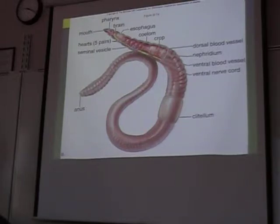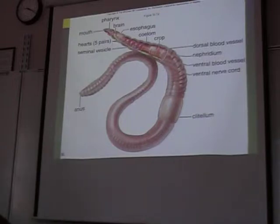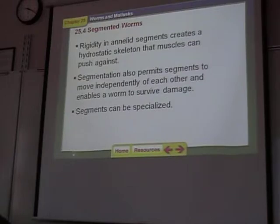It's got a gizzard. A gizzard has little stones in it and grinds up the dirt — it's almost like teeth. In a chicken, when you're eating a chicken gizzard, it's similar — or turkey gizzards. When you have a pet parrot, you have to feed them little grits — little rocks — which go into the gizzard.